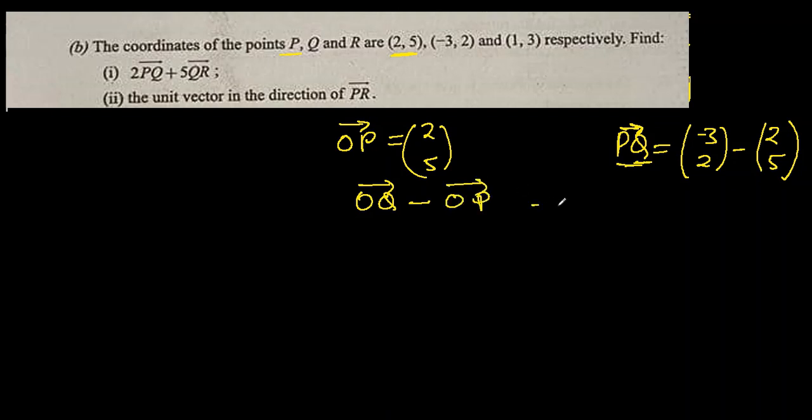Whenever they say PQ, the head of the vector is on Q, tail is on P, so we find it by subtracting the tail from head. First we write head which is Q, Q is (-3, 2), minus P is (2, 5). The coordinates of P are (2, 5), actually it is the position vector OP. We are basically subtracting OQ minus OP, and that will give us PQ. So -3 minus 2 is -5, 2 minus 5 is -3. This is PQ.